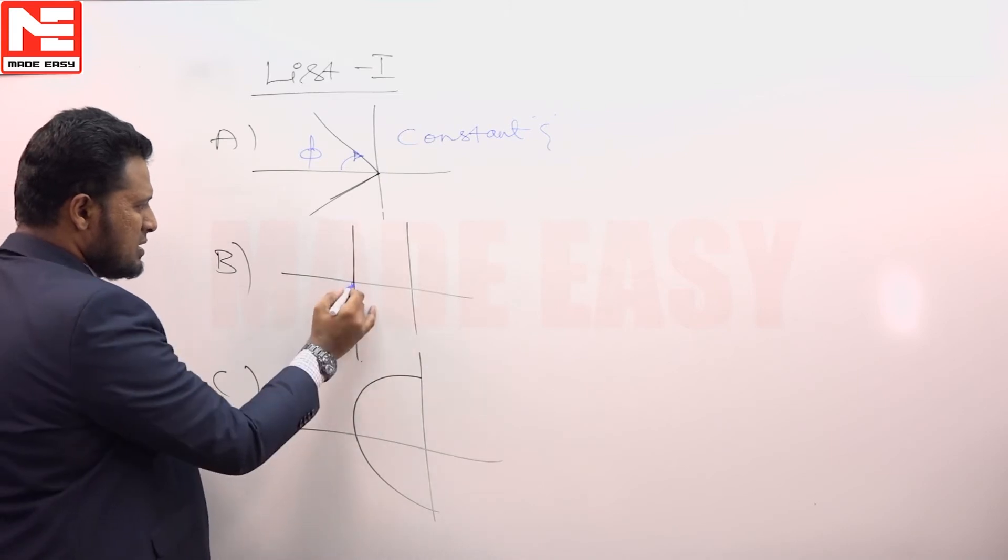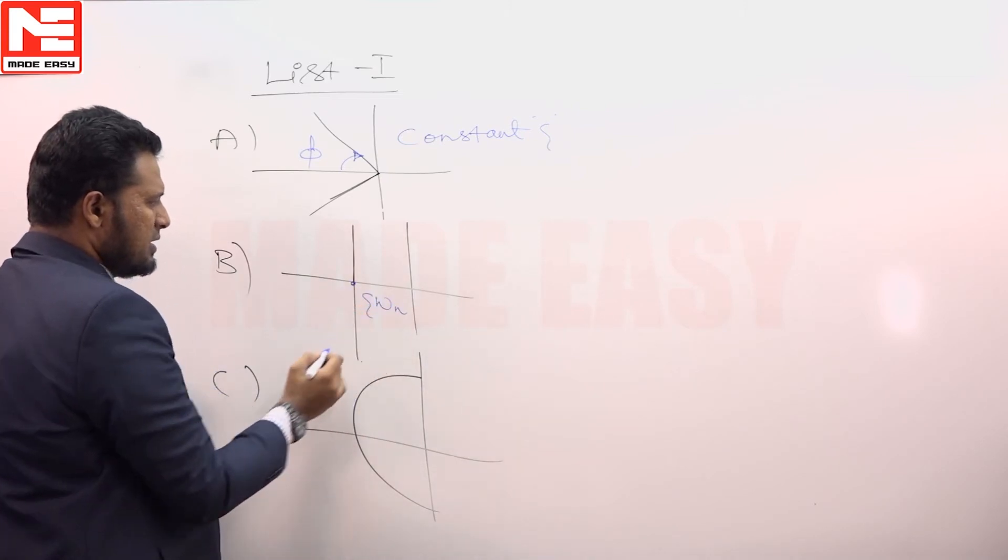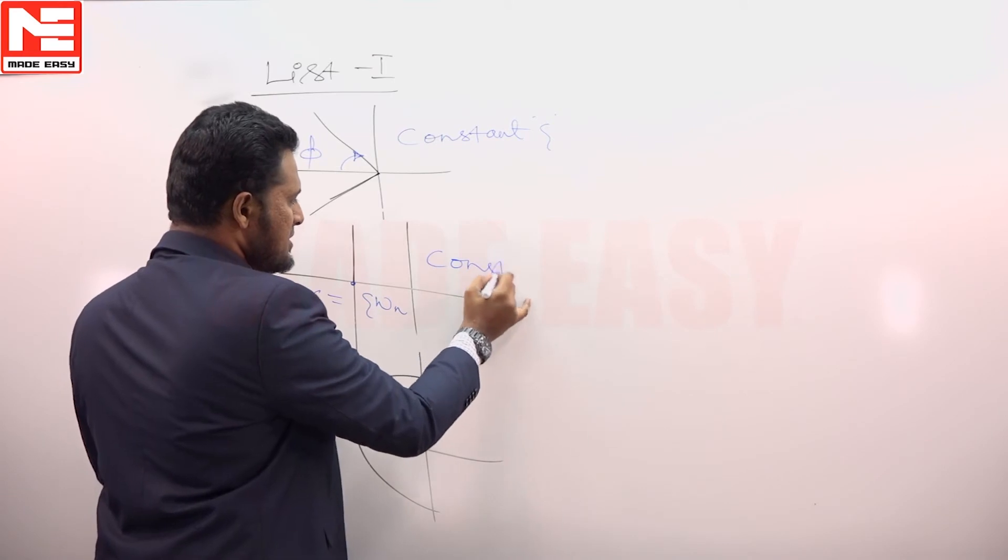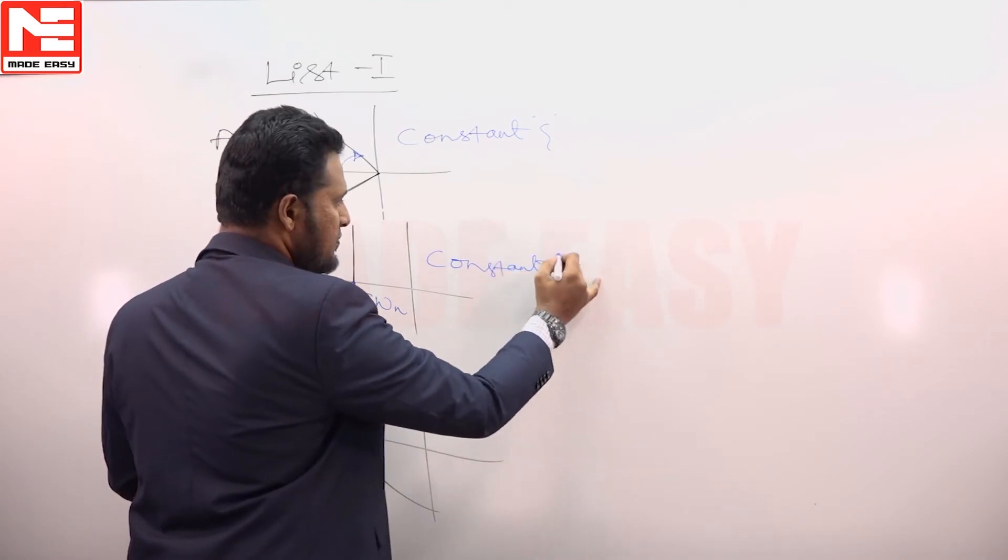Along this locus, zeta omega n, that is alpha, is constant. This is constant alpha locus.